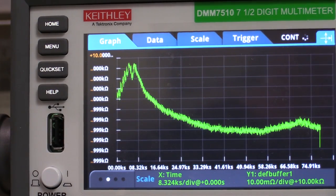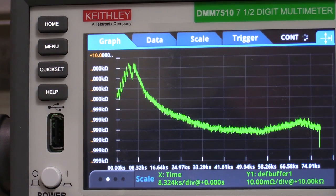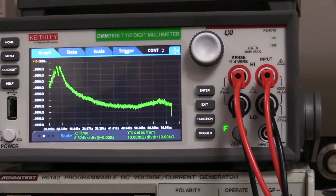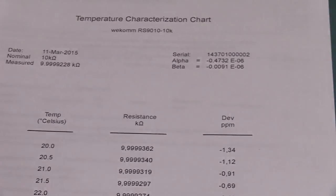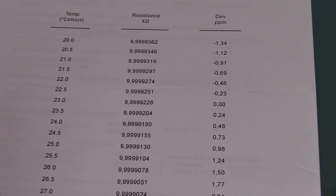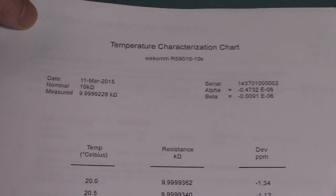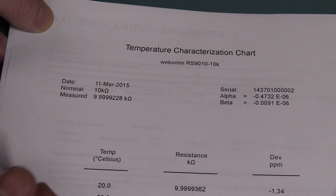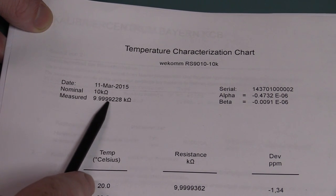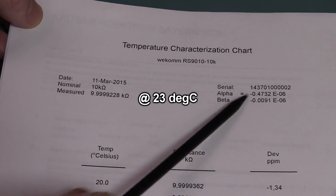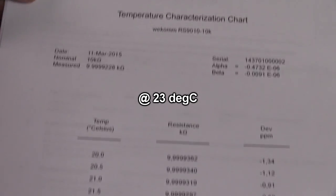I'm using my Keithley 7.5 digit multimeter here, pretty much the best meter I have in the lab. This is the original cal certificate with it. Bloody stupid tripod, I've got to get myself a new tripod. Doesn't stay still, camera's too heavy. This is the original cal certificate. Its nominal value is 9.9999228. So that four nines there. And that's what's written on the back of it, its nominal stated value.